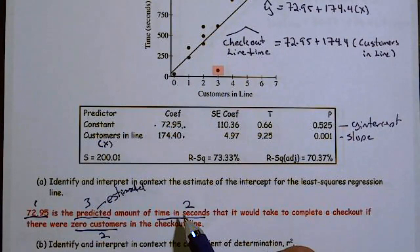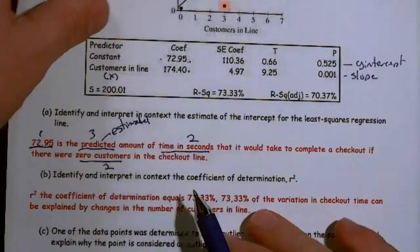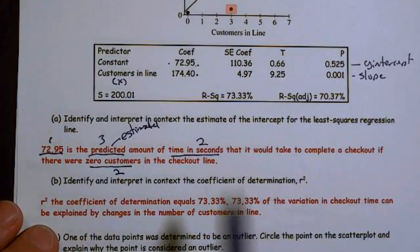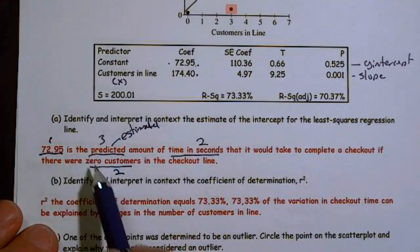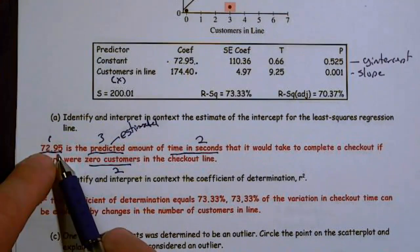That had to be included. And then we needed to make sure that we had it in context, time in seconds that it would take to complete a checkout if there were zero customers. And you must mention that there's time in seconds and zero customers.